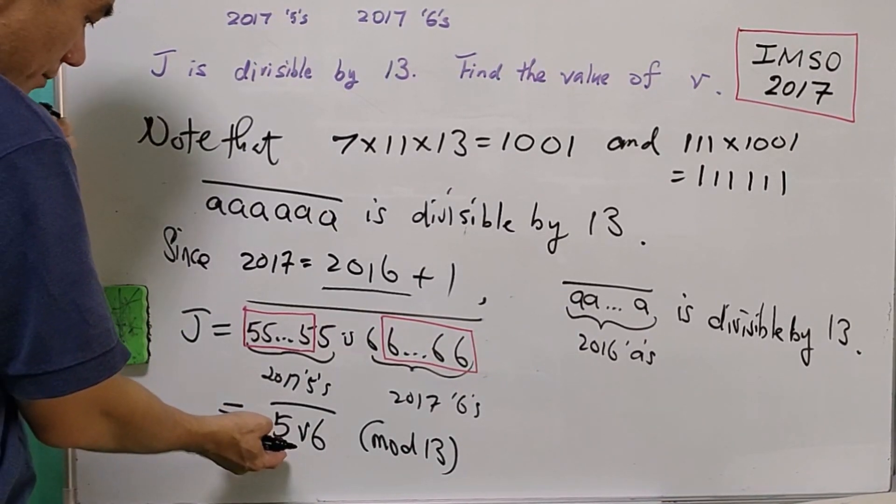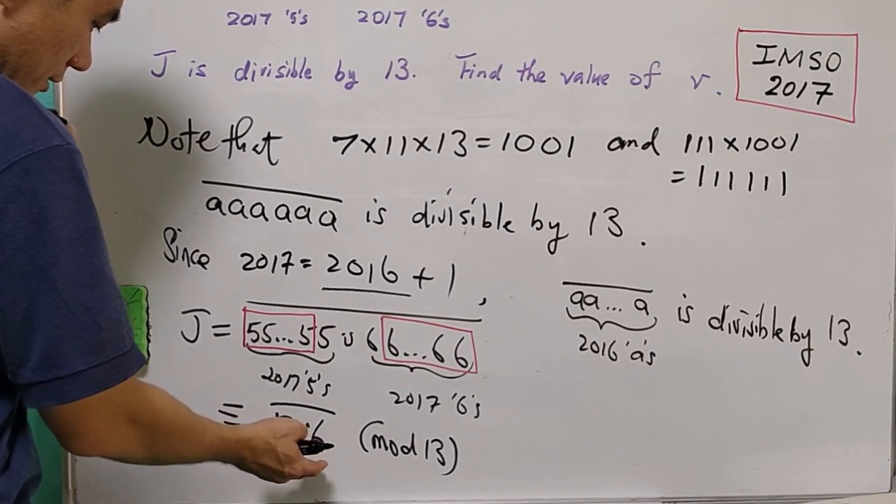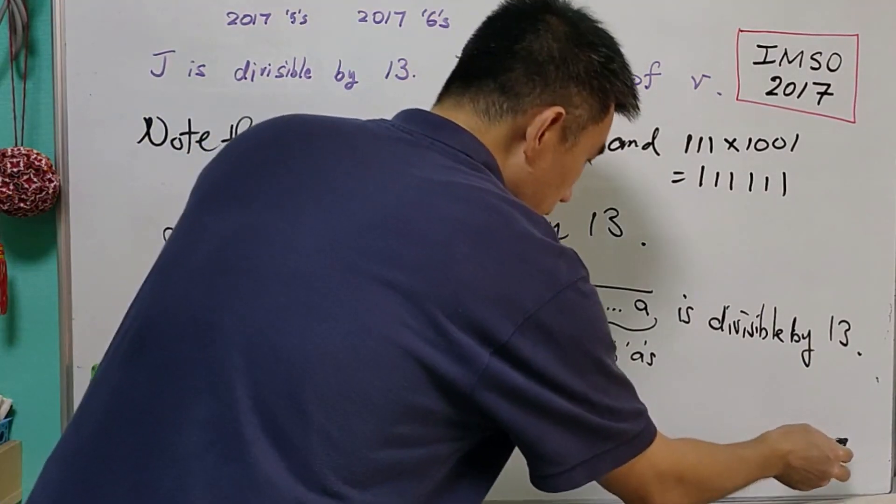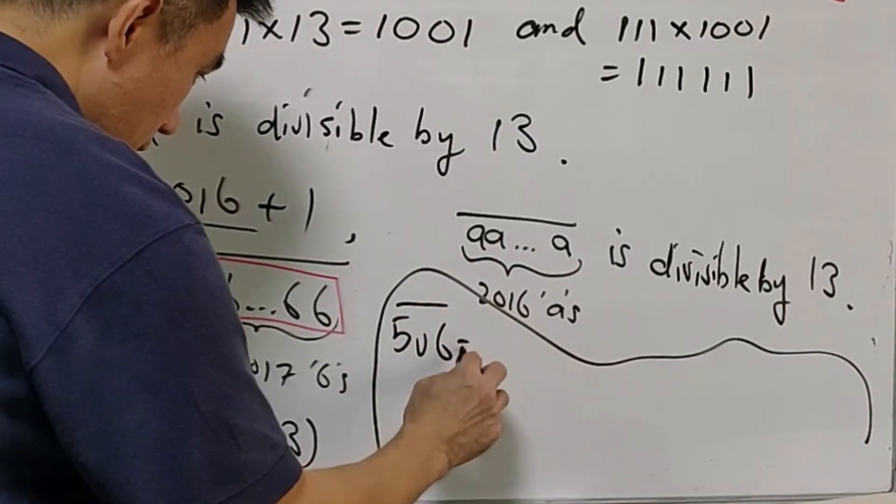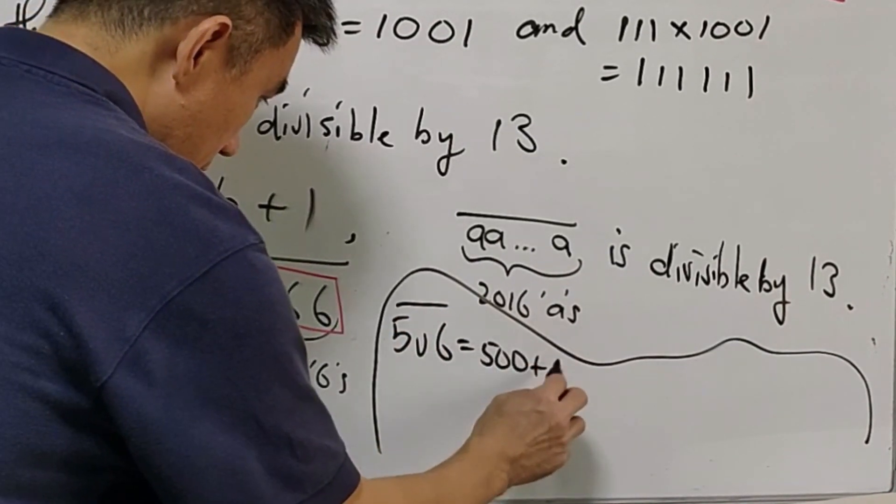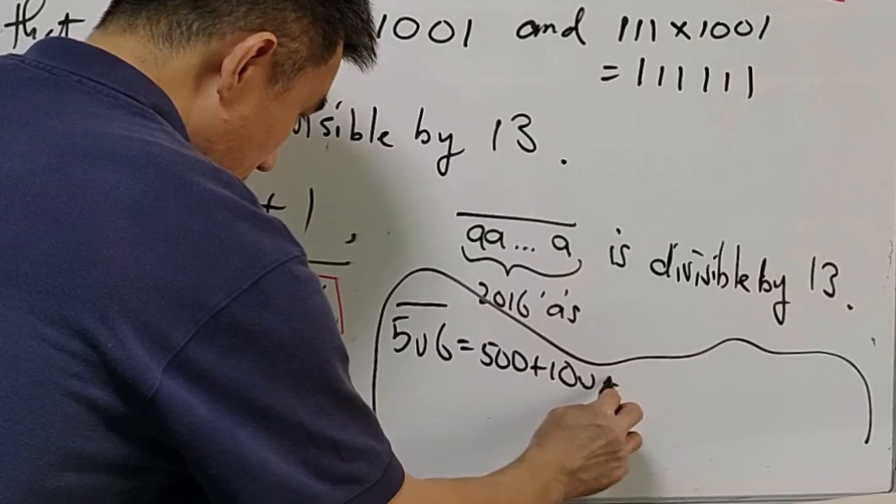Now note that 5V6 is equal to 500 plus 10V plus 6.